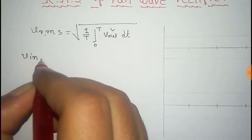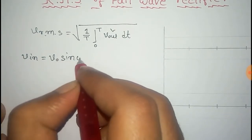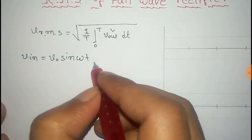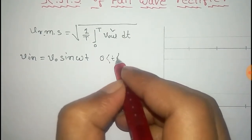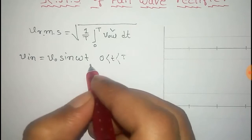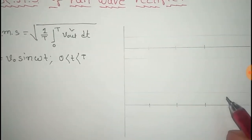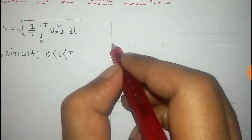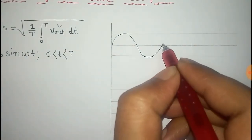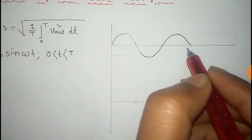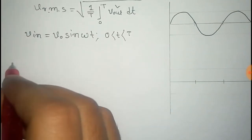For this full-wave rectifier, we consider that the input signal is given by V₀ sin(ωt) for the range 0 to capital T, where capital T is the time period. If we plot this input signal with time, the plot will look like this.